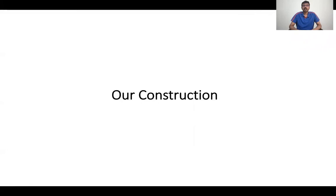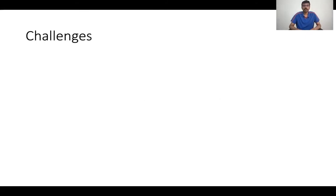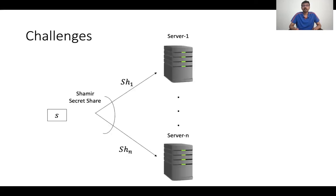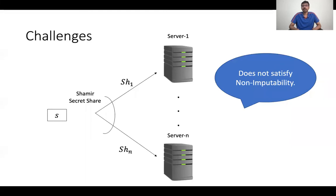In the rest of the talk, I'll mainly focus on our construction of traceable secret sharing in the minimal setting where there are no server collusions and we are required to trace only a single traitor. Before we move on to our construction, let me explain the key challenges involved. Let's start with the basic question of whether Shamir's secret sharing is already a traceable secret sharing. Unfortunately, Shamir's secret sharing does not satisfy the non-imputability property, because the dealer knows all the shares that are sent to each of the servers, and hence it's easy for the dealer to accuse an honest server of cheating.